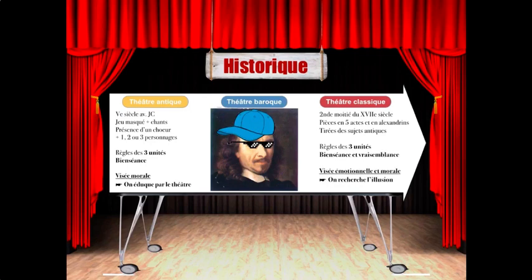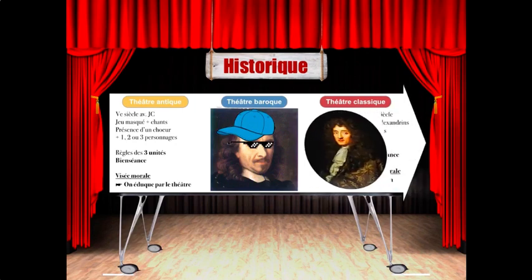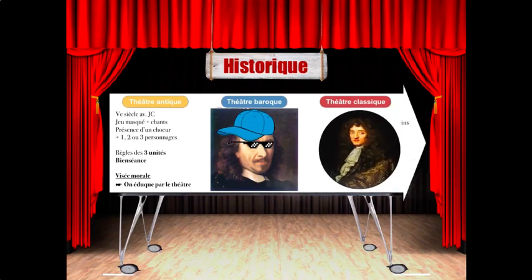C'est le mélange entre le plaisir de la tragicomédie et la visée morale du théâtre antique. Et l'auteur de tragédie classique par excellence, c'est bien sûr Racine. Il a très bien compris les règles du théâtre classique et les intègre parfaitement dans ses pièces.